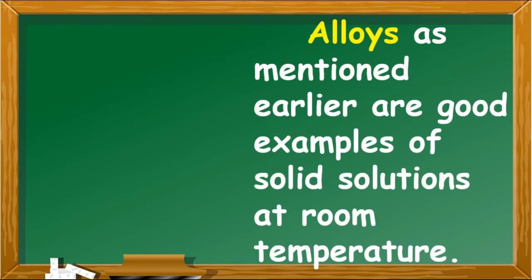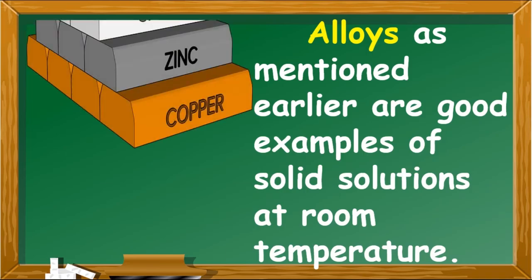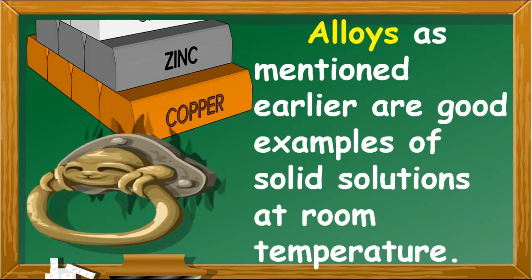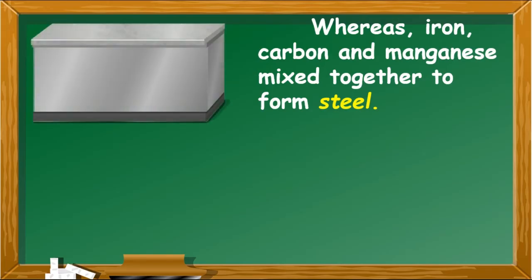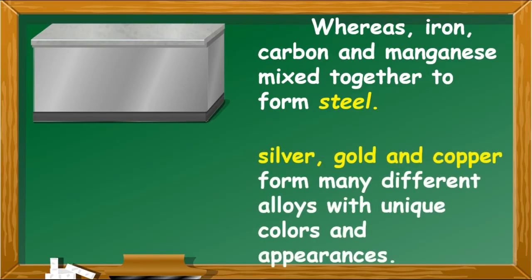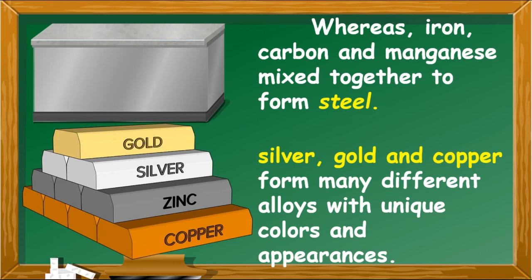Alloys, as mentioned earlier, are good examples of solid solutions at room temperature. For example, copper and zinc dissolve in each other and harden to form brass, whereas iron, carbon, and manganese mix together to form steel. Furthermore, silver, gold, and copper form many different alloys with unique colors and appearances.